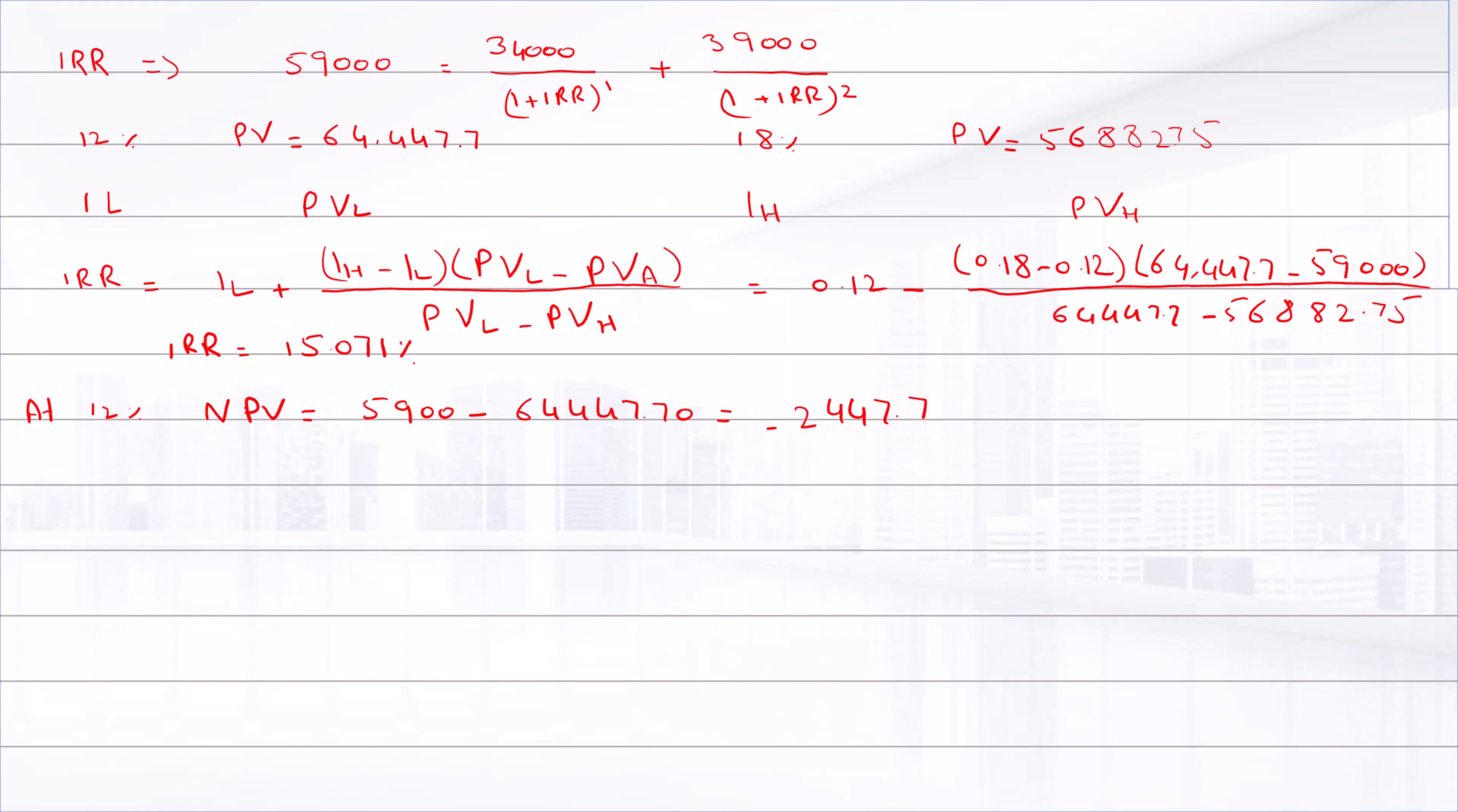At an interest rate of 0%, we can only add cash flows. So the NPV is 59,000 minus 34,000 minus 39,000, and the final answer is negative $14,000.